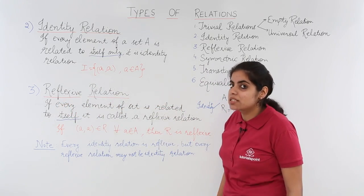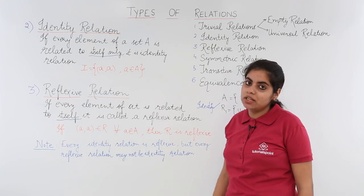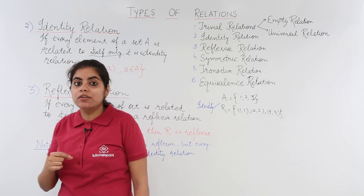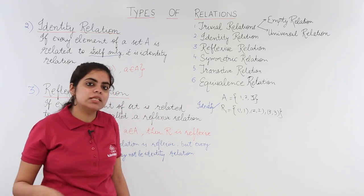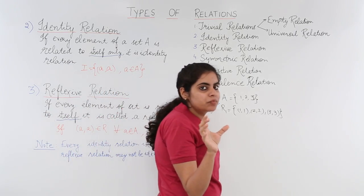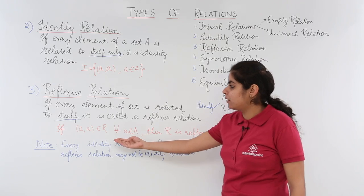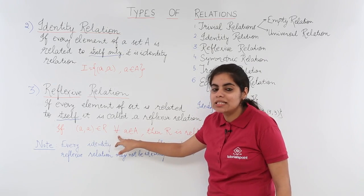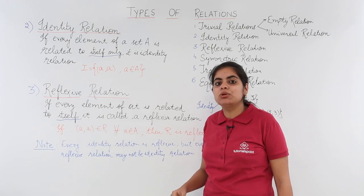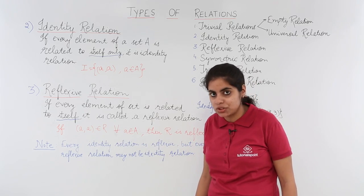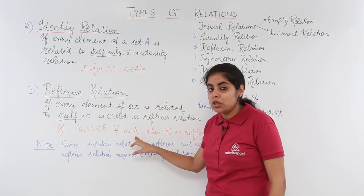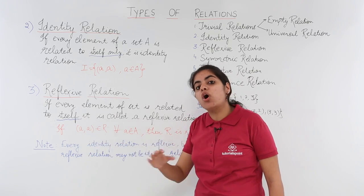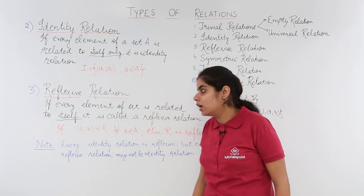If every element of a set is related to itself, it is called a reflexive relation. That means I have a relation wherein elements of a set are related to itself, and there can be something else also, because I don't have the word 'only.' The mathematical definition is: if (a, a) belongs to R for all a belonging to A — 'for all' meaning you take all elements of the set into consideration — then it is a reflexive relation.